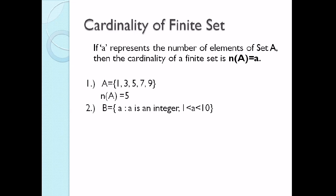For our second example, it is in set notation: the set of all A such that A is an integer where A is greater than 1 but less than 10. We need to list all elements satisfying the set notation — the integers greater than 1 but less than 10: 2, 3, 4, 5, 6, 7, 8, and 9. So we count the elements; therefore the number of set B is 8.